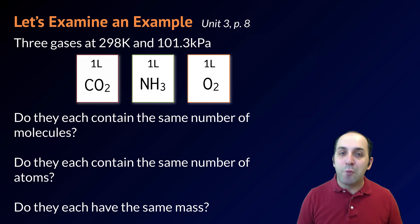Let's take a look at an example that uses Avogadro's hypothesis. This is on page eight of our unit three packet. So here are three gases at 298 degrees Kelvin and 101.3 kilopascals. We could point out that this is not actually standard temperature, it's actually room temperature or 25 degrees Celsius. But this is standard pressure. Not that it matters. The only thing that matters is that they're all under the same conditions of temperature and pressure.